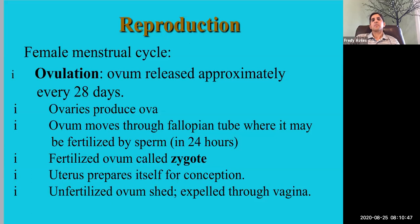If fertilization occurs, the uterus prepares itself — a thick, fleshy lining develops along its walls, and the zygote tries to implant itself there and begin to grow. If the ovum is not fertilized, that lining is shed and expelled through the vagina — that's your period. But if the zygote does implant, you won't get your period, and after a while you'll begin suspecting you're pregnant.